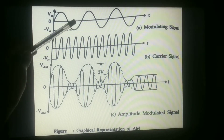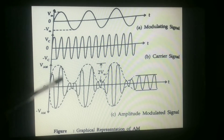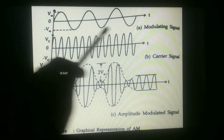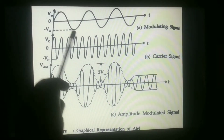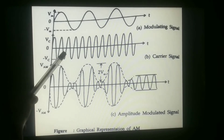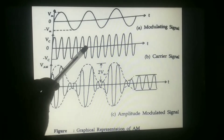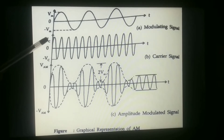This is the modulating signal and this is the carrier signal. This is the amplitude modulated signal — the AM output signal. This is a sine wave, so the amplitude varies from plus Vm to minus Vm. The carrier signal amplitude is represented by Vc, so the amplitude varies from plus Vc to minus Vc.